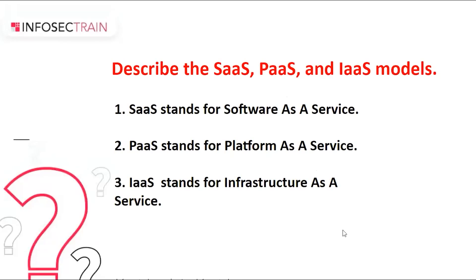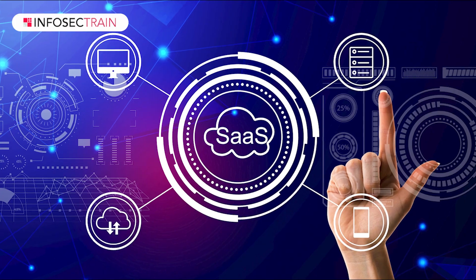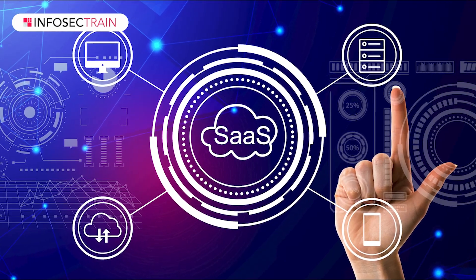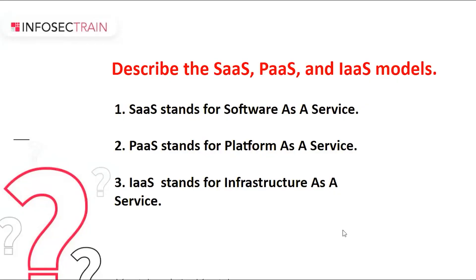Describe the SaaS, PaaS, and IaaS models. Cloud service offerings are SaaS, PaaS, and IaaS, also known as cloud service models or cloud computing service models. SaaS stands for Software as a Service, PaaS stands for Platform as a Service, and IaaS stands for Infrastructure as a Service. Software as a Service gives customers access to applications that are entirely hosted and run on the provider's servers. The applications, data, and operating system are managed by providers; clients are only responsible for obtaining their applications. Google Drive is an example of the SaaS model.